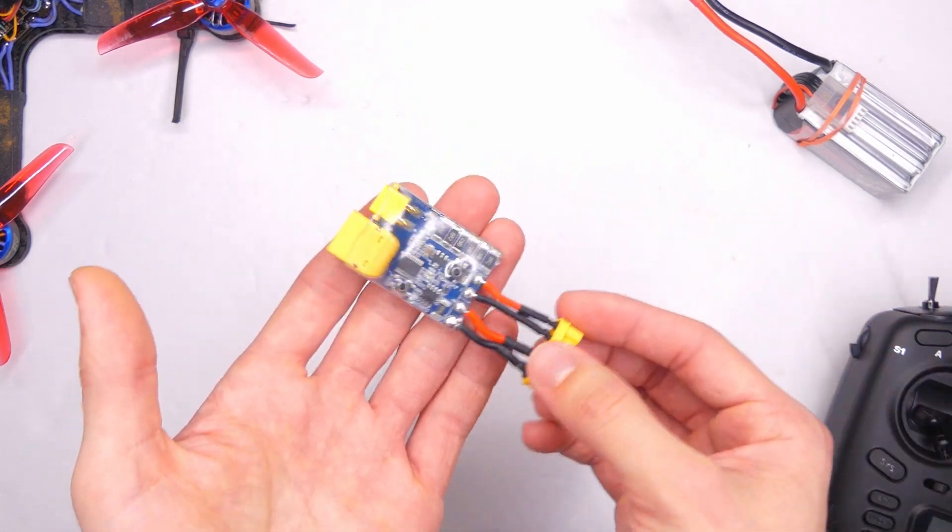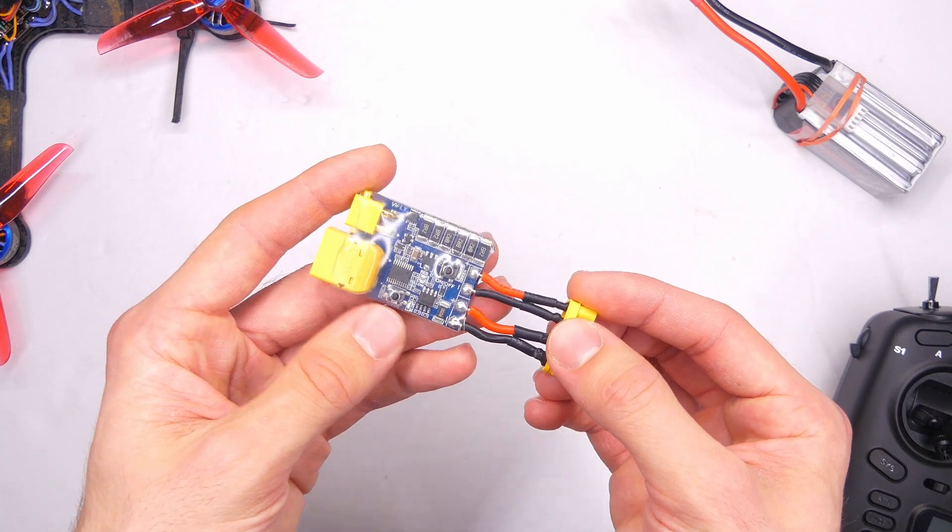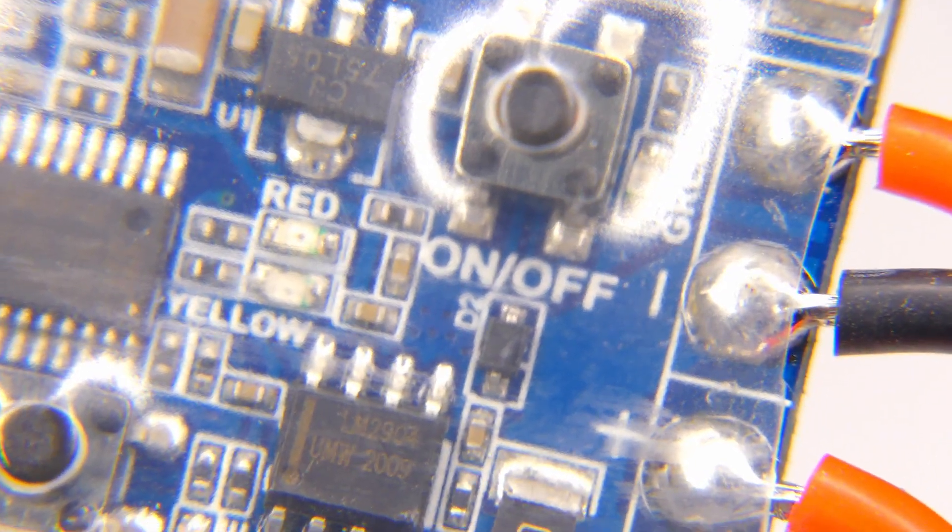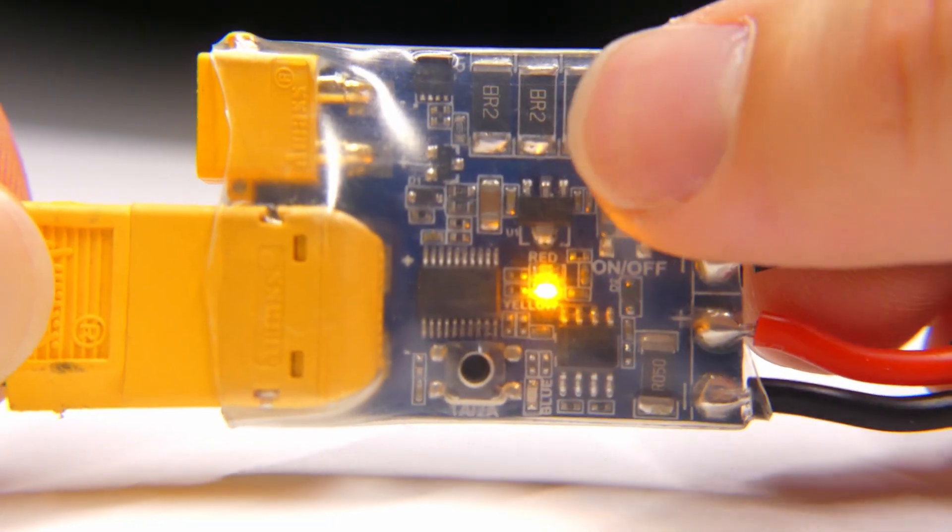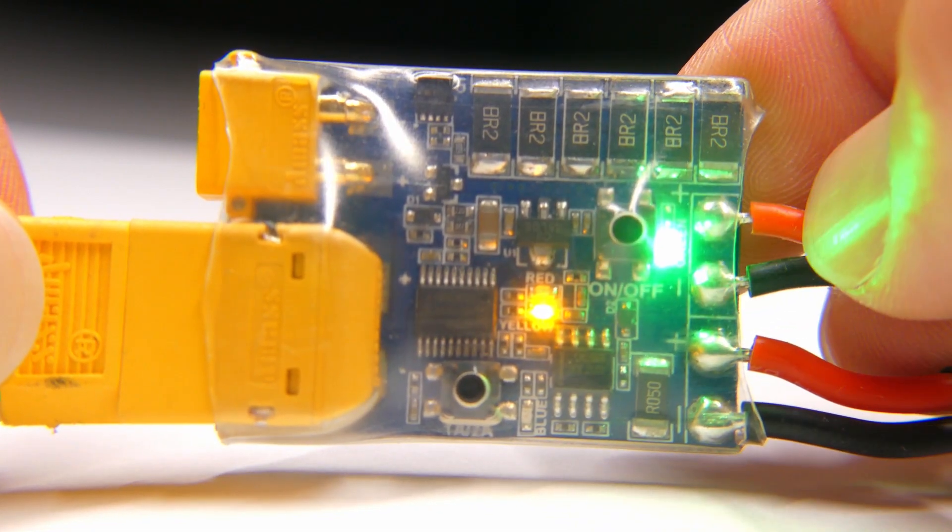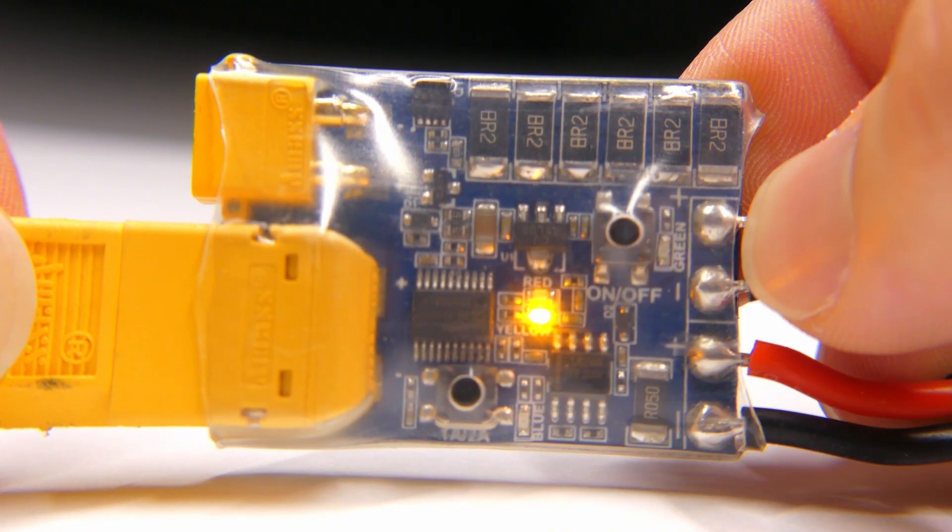First of all, really what they've done, the biggest improvement that they've made is it now has an on and off switch. So you can actually turn on and off the power that you're sending from the battery to your drone.